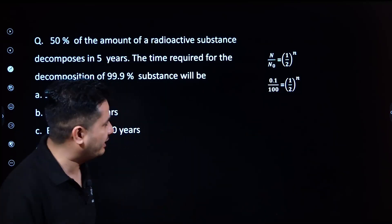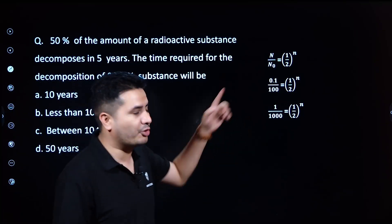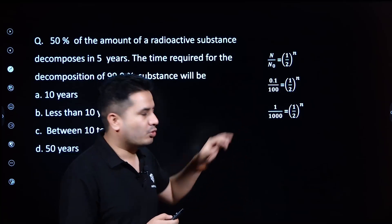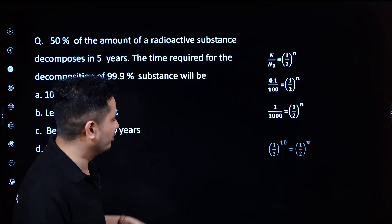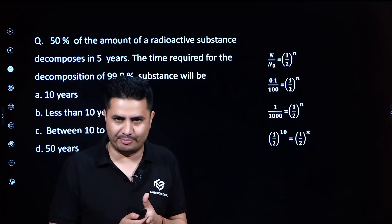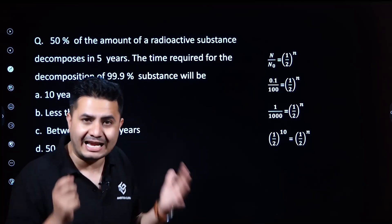The value is 0.1/100 = 1/1000, which equals (1/2)^n. Now, 1/1000 is approximately equal to (1/2)^10.